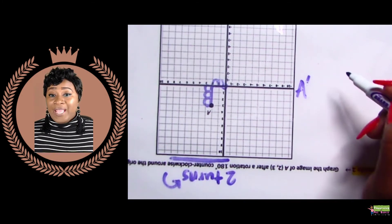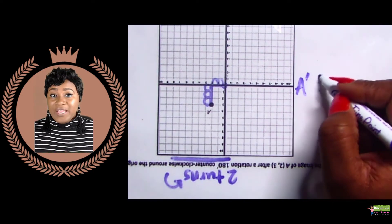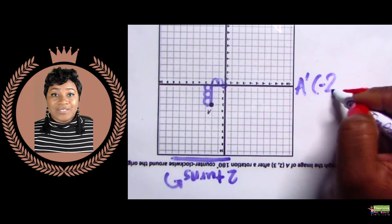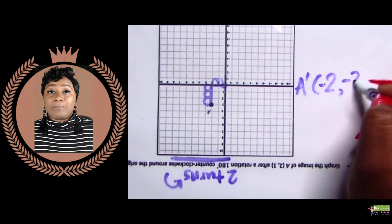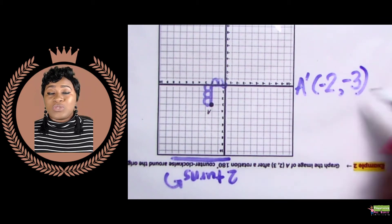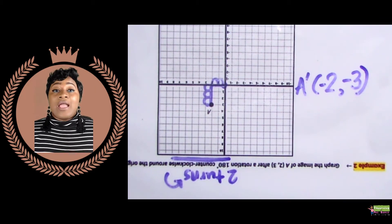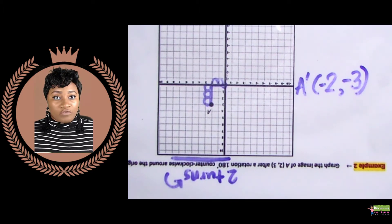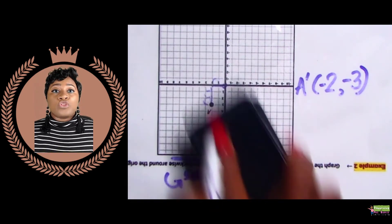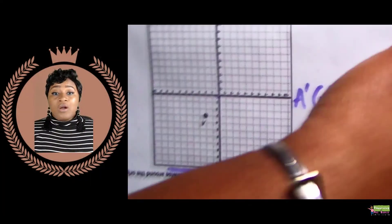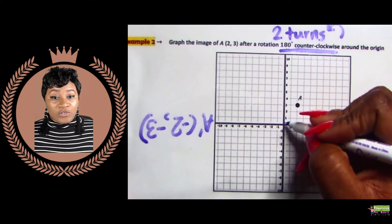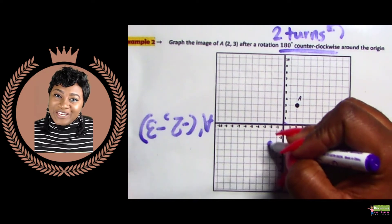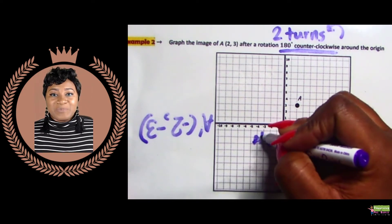Our new coordinate will be A prime: negative two, negative three. Our x-coordinate is negative two because we moved two units to the left of the origin, and our y-coordinate is negative three because we moved three units down. For step four, we'll rotate the graph paper back to its original direction and graph negative two, negative three. Here's our A prime.